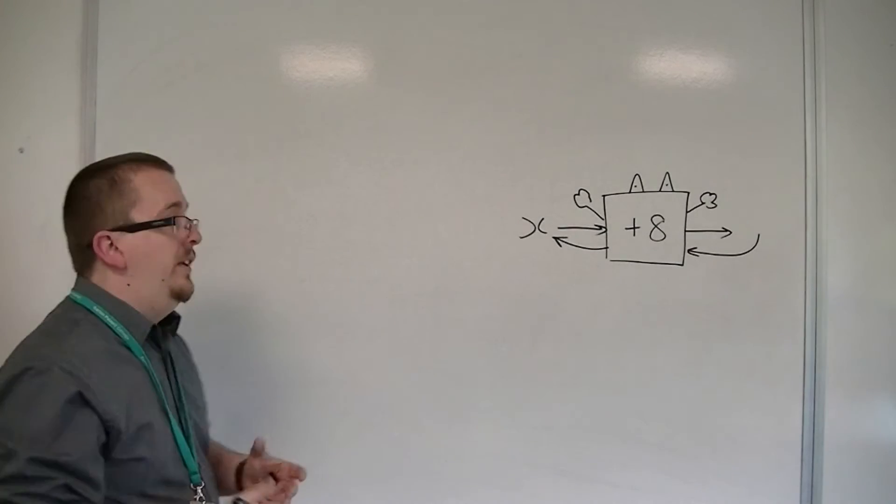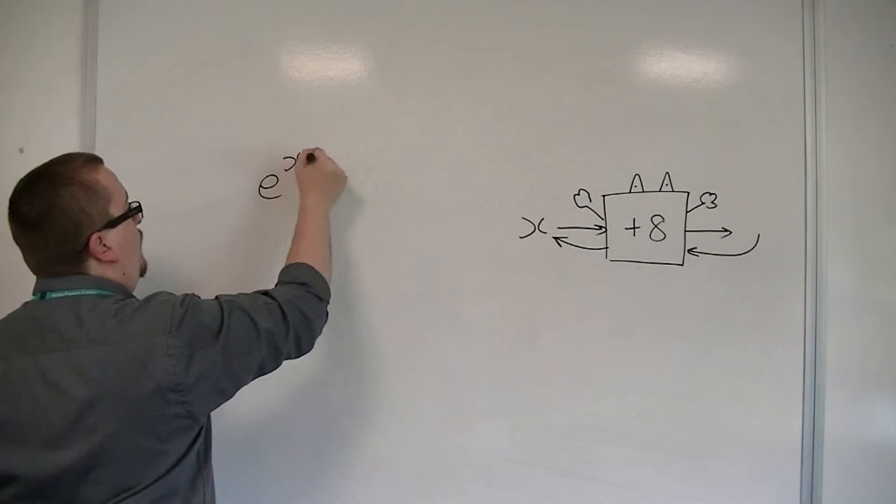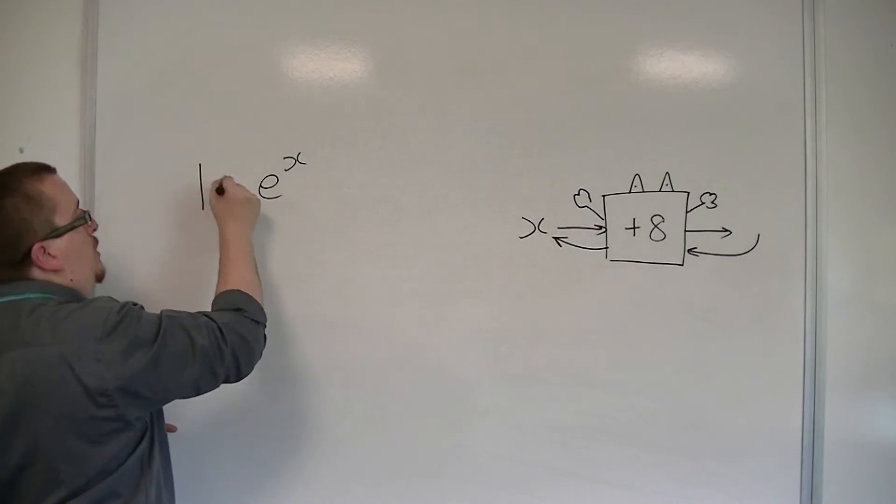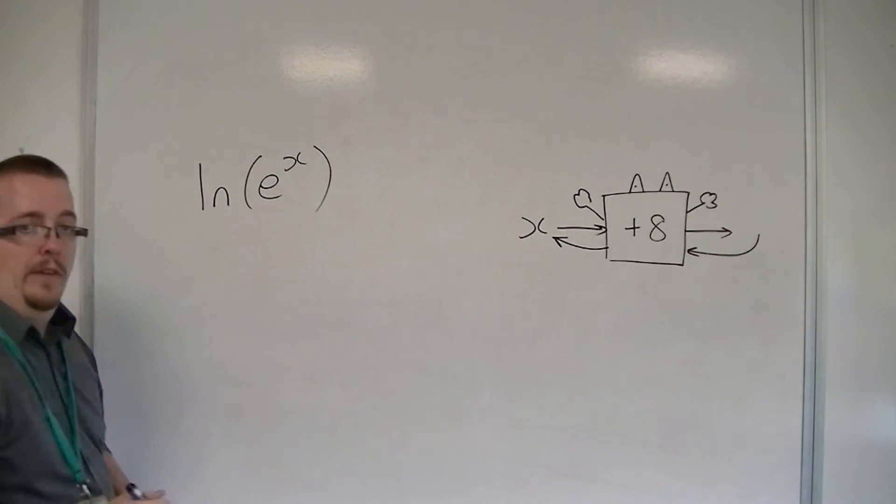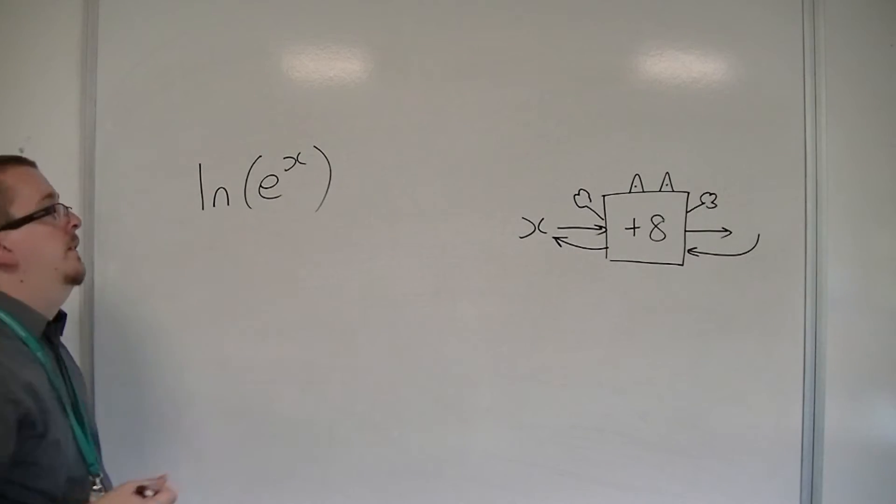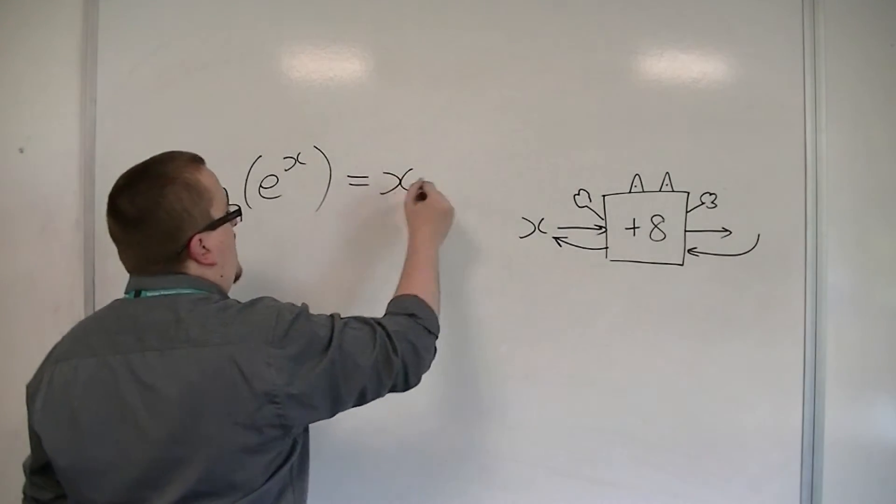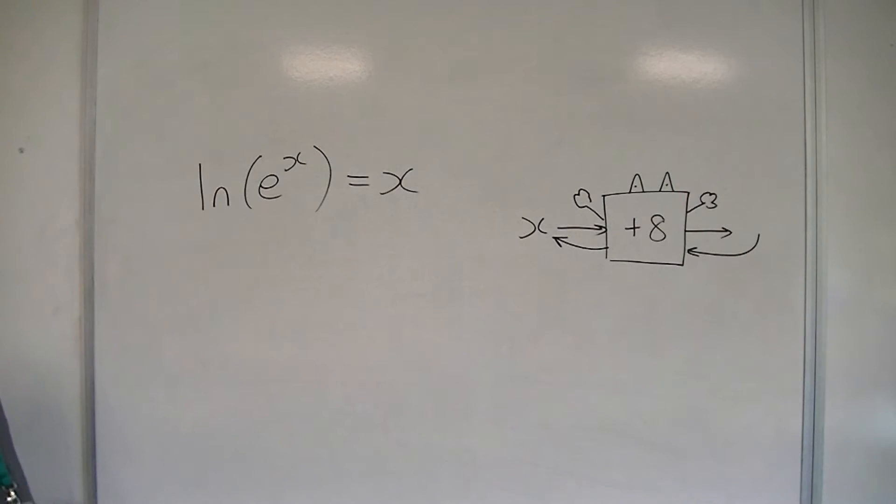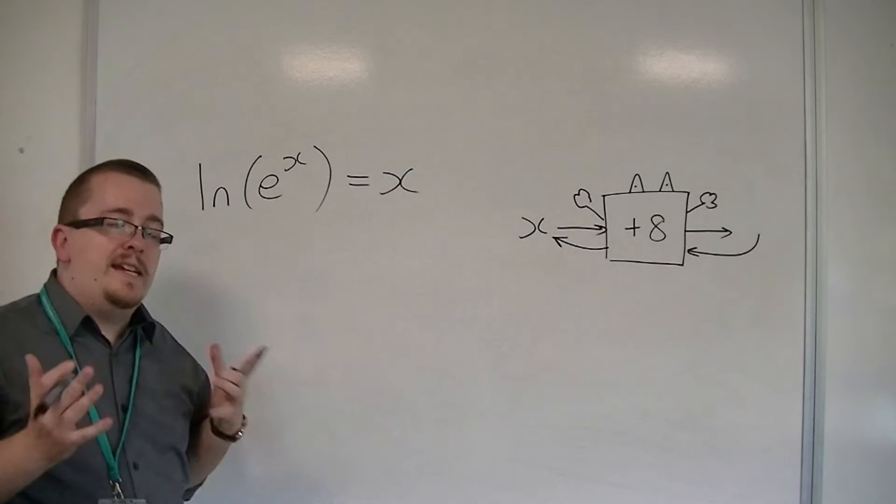So what that means is that if you perform e to the x first, and then you log your answer, what happens is that the log and the e reverse each other. And so this is just the same as just having x. So the log and the e effectively cancel each other out.